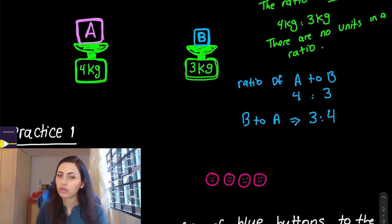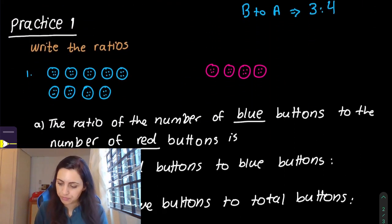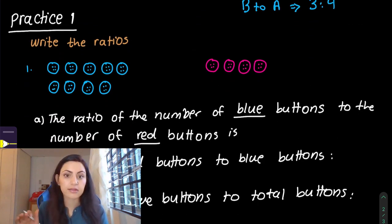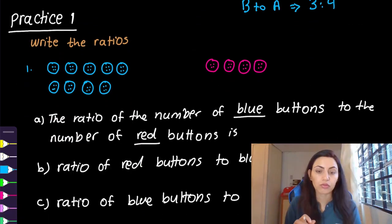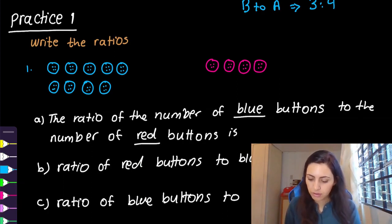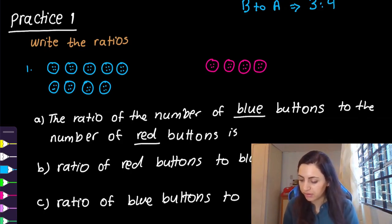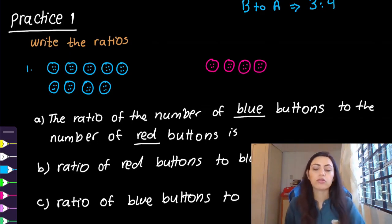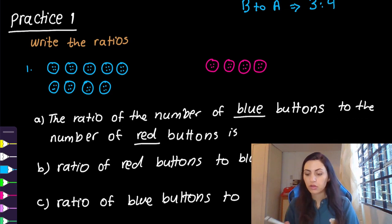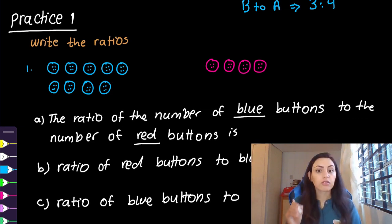The lesson is finished, and now we're going to do some practice together. Practice number one: write the ratios. You can see some blue buttons and some red buttons. Part A: the ratio of the number of blue buttons to the number of red buttons.